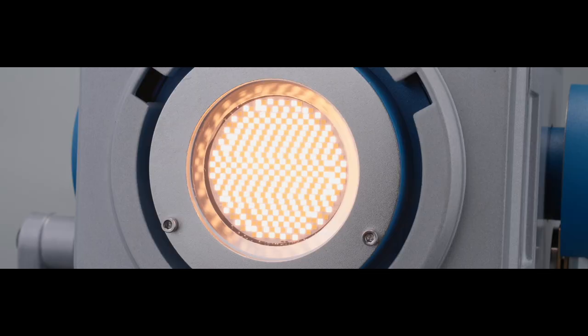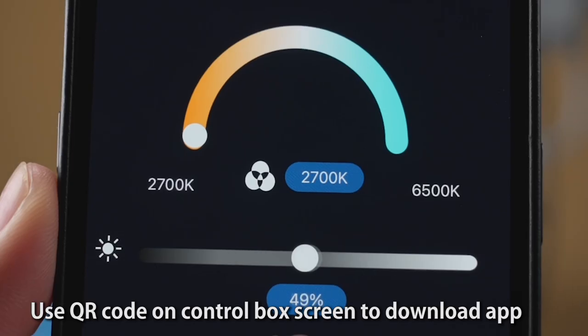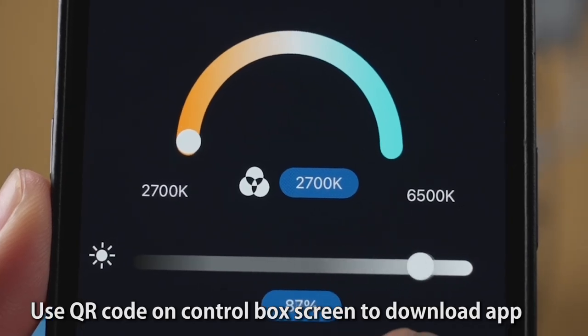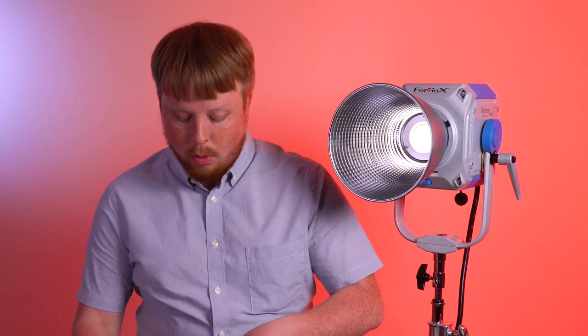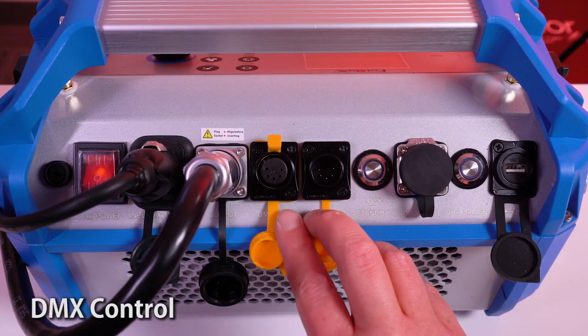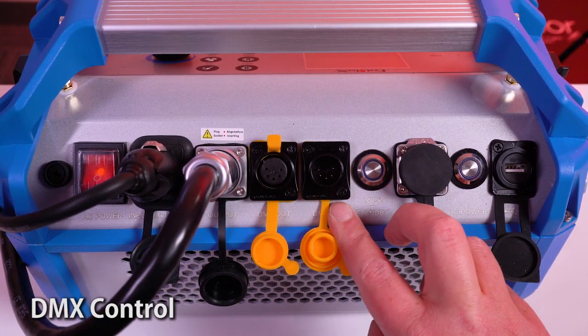Now this light is also controllable with an app, so you can download the app on your phone and control it when it's mounted out of reach. And it also has DMX ports for DMX control. The light actually comes with a DMX cable, so you can run it into a standard DMX board and control it that way as well.